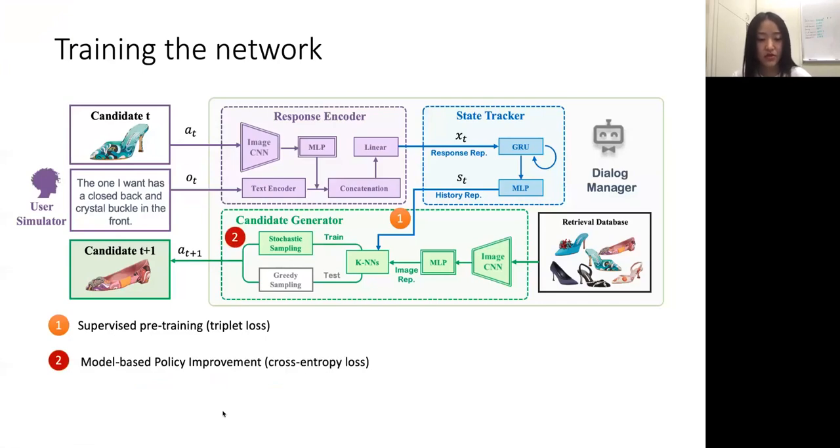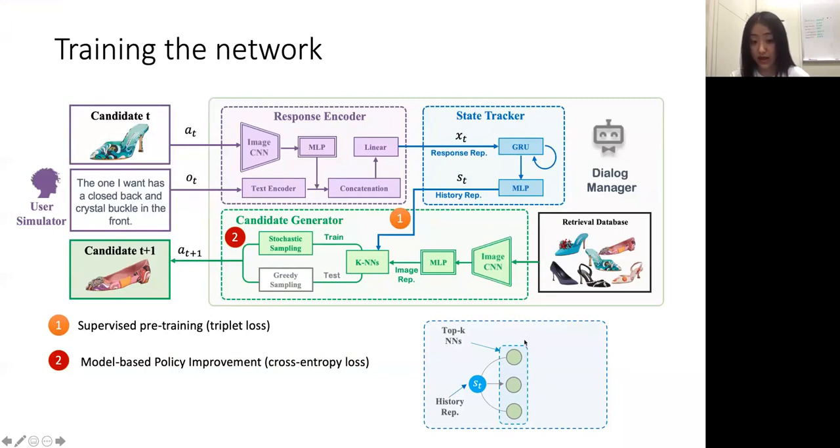For the second step, we would like to directly optimize for the final objective, the ranking of the target image or the ground truth image. After we estimated the history representation, we can search for the top K nearest neighbor in the retrieval database, and we can stochastically sample these examples. We can continue this stochastic sampling for each round, and in the end, we reward the system using the final ranking percentile. Even though we can optimize the network in this very basic way for policy gradient, because we actually have the user model or the environment model, that is the user simulator, we can actually leverage these known dynamics to have a more effective reinforcement learning process.